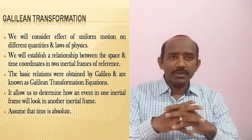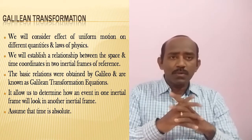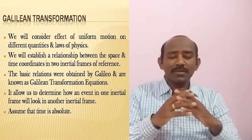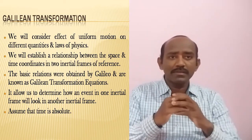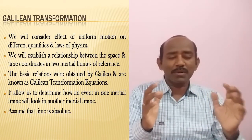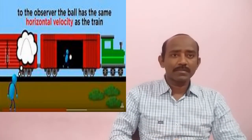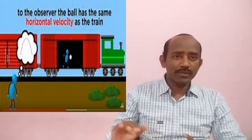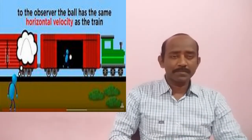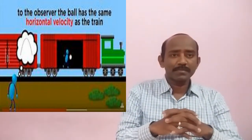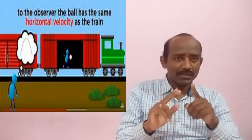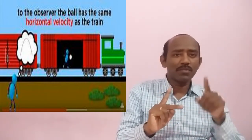In Galilean transformation equations, why is it called like that? Because this concept, or these transformation equations, were derived by Galileo. That's why these equations are known as Galilean transformation equations. Just imagine: one observer is standing on the platform and another observer is inside a moving train, sitting in a seat. Here we are considering two observers — one is on the platform and another is inside the moving train.